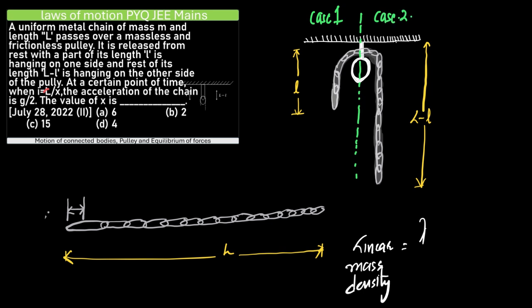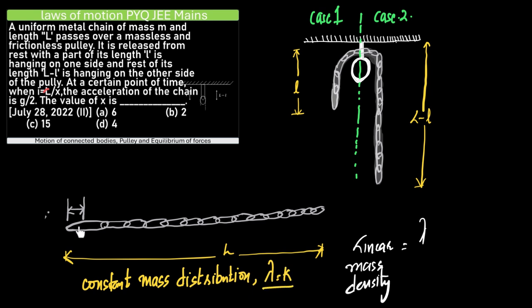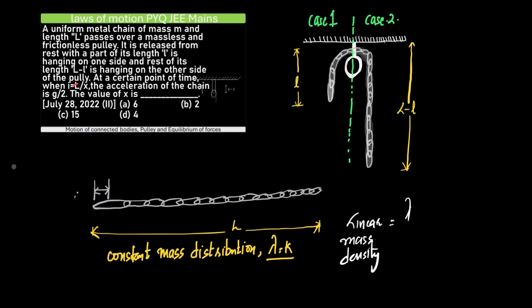Before going further, let us assume that the linear mass density throughout this complete chain has a constant mass distribution, such that lambda is constant throughout the chain. This means the complete chain has a constant linear mass density of lambda. Physically, this means the mass of one meter of this chain equals lambda times one, and the mass of two meters of chain equals lambda times two, and so on.